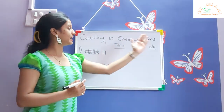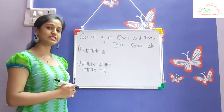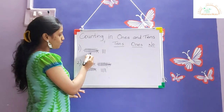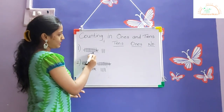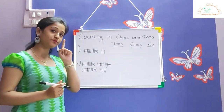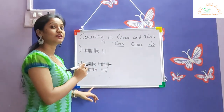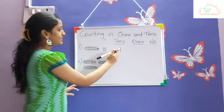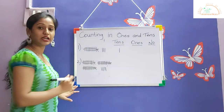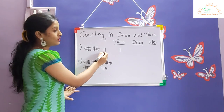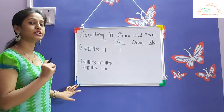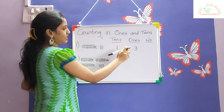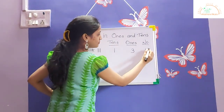Counting in ones and tens. Let us see how many tens and how many ones we have. One, two, three, four, five, six, seven, eight, nine, ten — so we have one bundle, equal to one ten. We write one in the tens column. The remaining are one, two, three — that is three ones. One ten and three ones makes number thirteen.